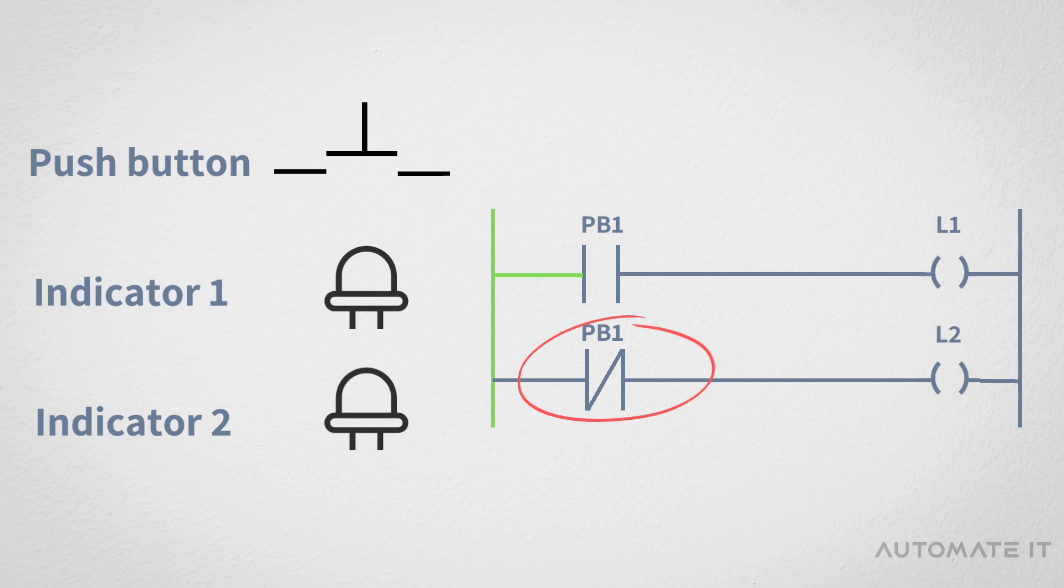As the second rung uses normally closed contact, it will by default turn on the second indicator, while the first indicator is off.